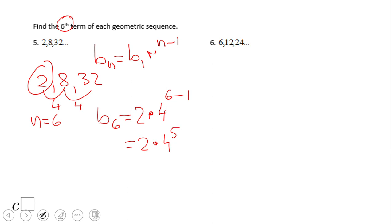We're going to grab a calculator here. 1024 times two, 2048. B sub six, the sixth term of this geometric sequence is 2048. Pause this video and I hope you can try number six.